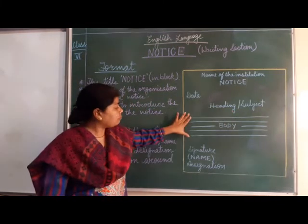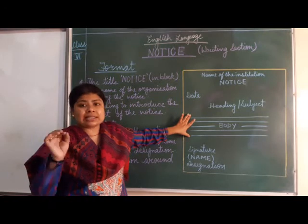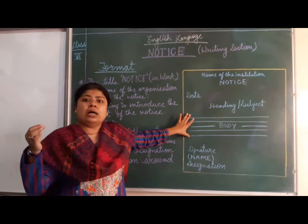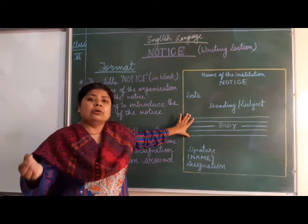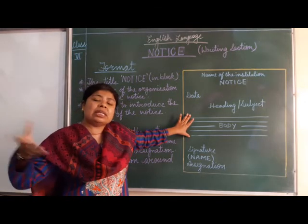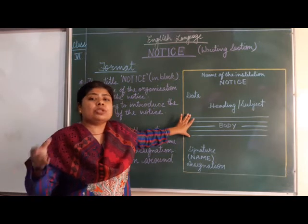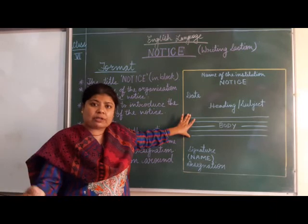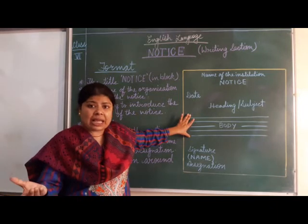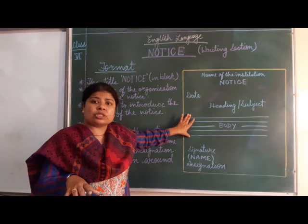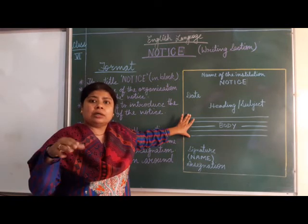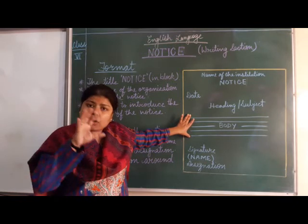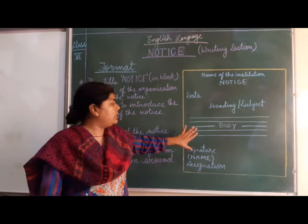Then the main body, where the description about the notice will go — regarding what, where, when, and how the event is going to be organized. That means: what is the main event, the date of the event, the time of the event, the place of the event, how to apply for it, to whom to submit the form if there is a process of submitting some application. All that information is given in the body.